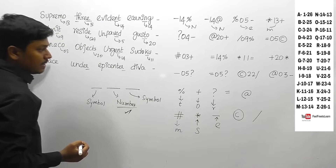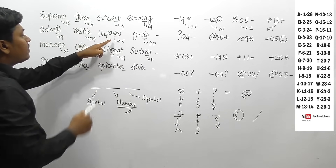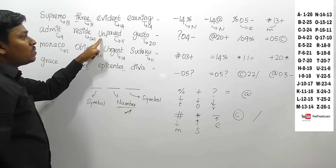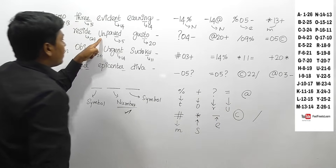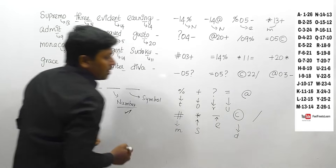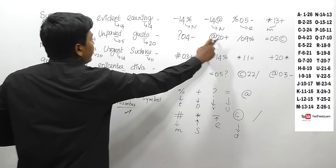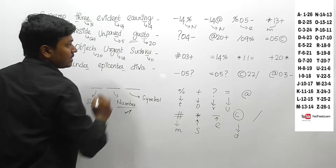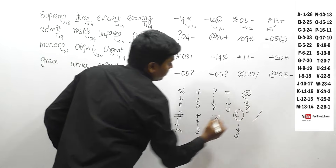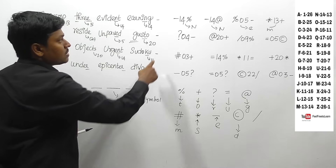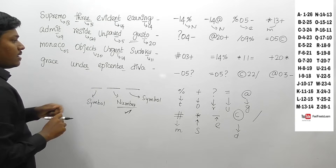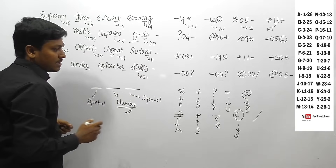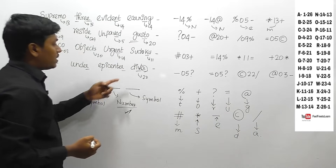For 'monaco', O is coded as plus and M is coded as a number symbol. We know 'unpaved' has number 5, so E = 5 alphabetically, and unpaved is coded as equal-to 05 copyright — meaning U is coded as equal to and D is coded as the copyright symbol. For remaining symbols: 'gusto' is coded as at-20-plus, and we know O = plus, so G is coded as at. The only remaining symbol is slash, used where the value is 22 (= V alphabetically), so A is coded as slash.